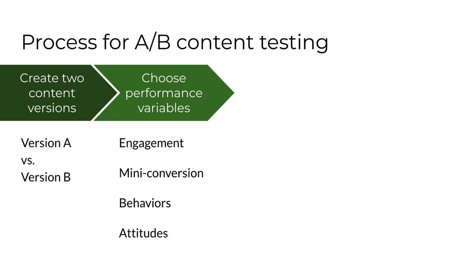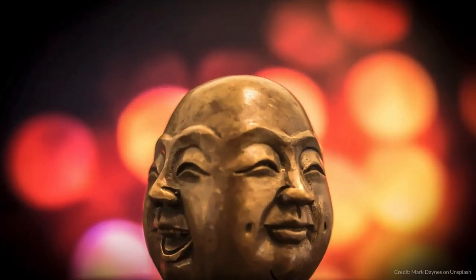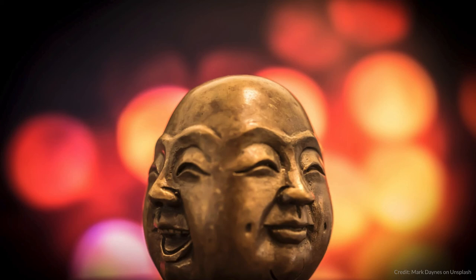Step two requires choosing the performance variables you'll test. Think back to the quantitative and qualitative measures from part two. For the course project, you won't measure page views since you're testing copy on a single page, but consider what you might count and whether it's meaningful with a small user group. For instance, would it be more valuable to ask a survey question about how likely a user would be to read the content? The best choices allow you to learn something valuable about how to improve content performance.